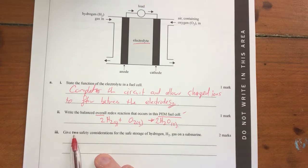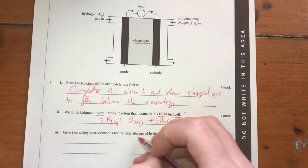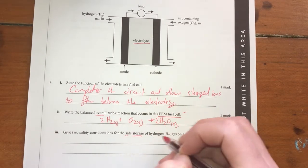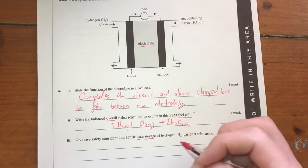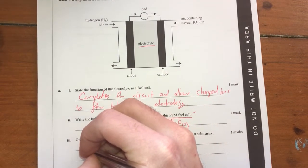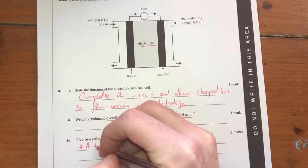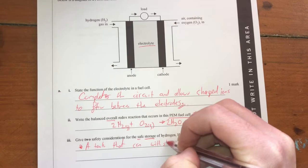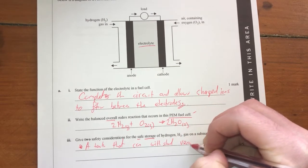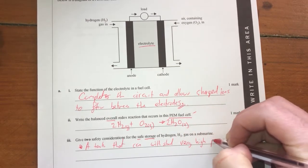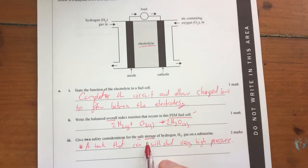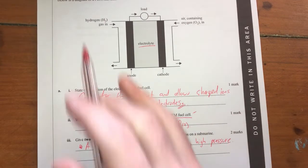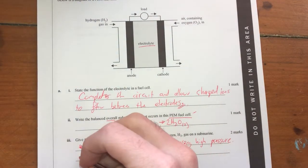Next, give two safety considerations for the safe storage of hydrogen on a submarine. Alright, so safe storage of hydrogen. One thing you need to know is hydrogen has to be stored under a really immense pressure. So your consideration must be a tank that can withstand very, very high pressures. So that's one thing you need to make sure because obviously if you've got a tank that doesn't withstand high pressures,